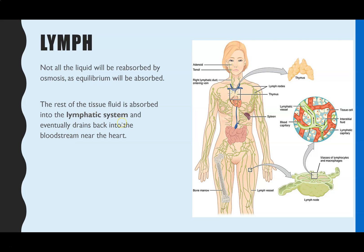The rest of the liquid still surrounding the cells and tissues has to be reabsorbed by a different route — and that's where the lymphatic system comes in. You just need to know that the lymphatic system has lymph vessels, which are similar to veins in that they have valves, and they surround the blood vessels. Any liquid that doesn't get reabsorbed back into the capillaries by osmosis gets absorbed into the lymphatic system — we call it lymph. Eventually the lymphatic system brings that liquid back into the blood near the heart, where the lymph vessels enter.